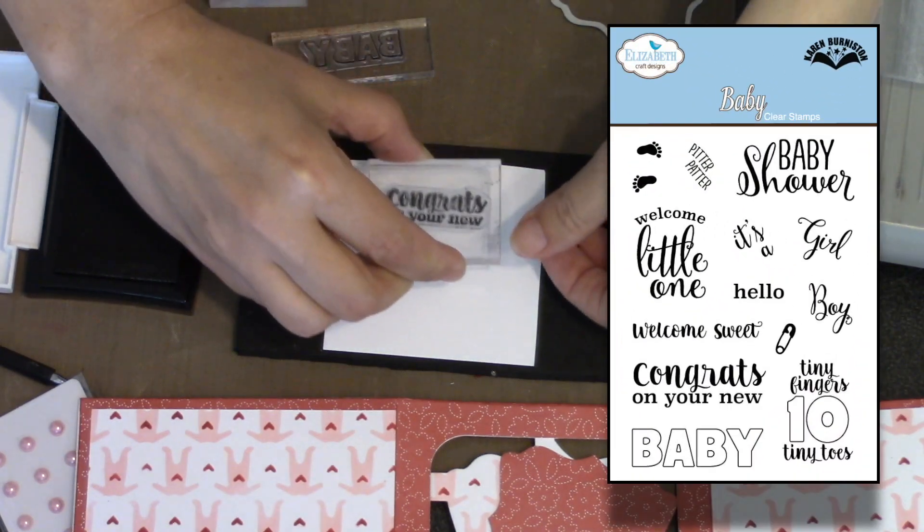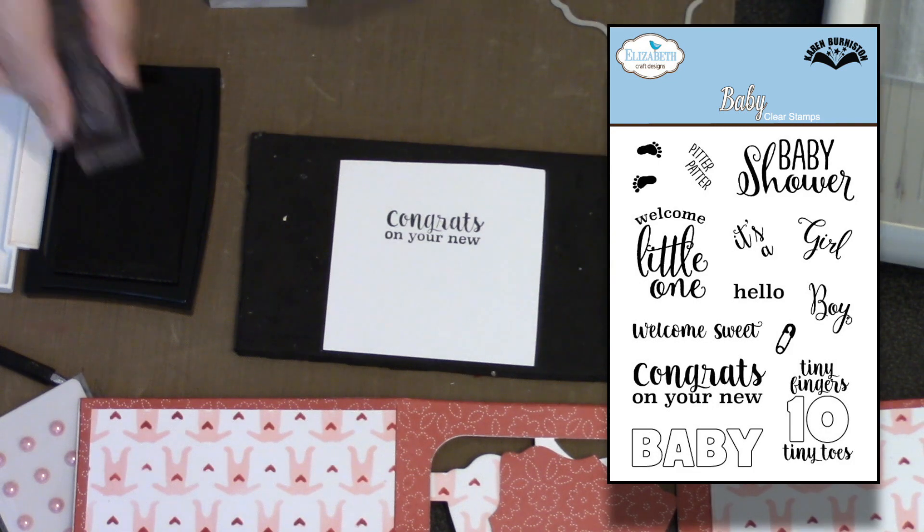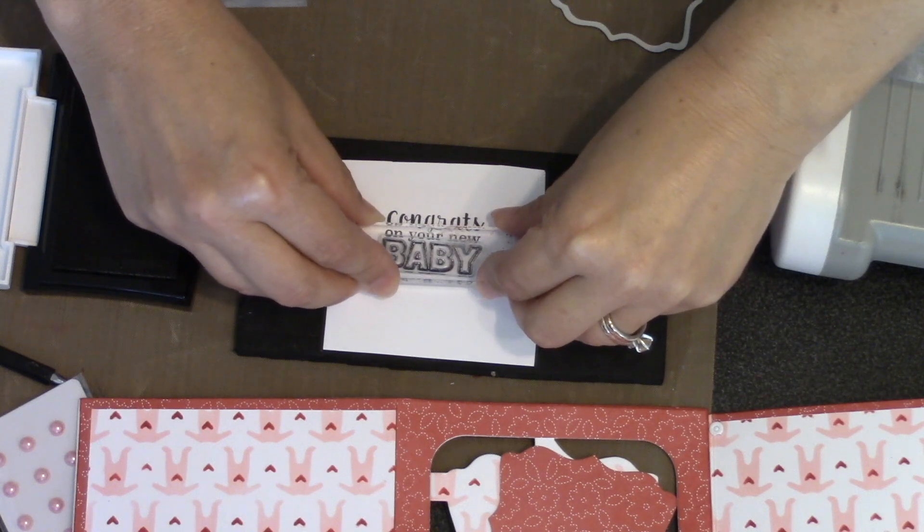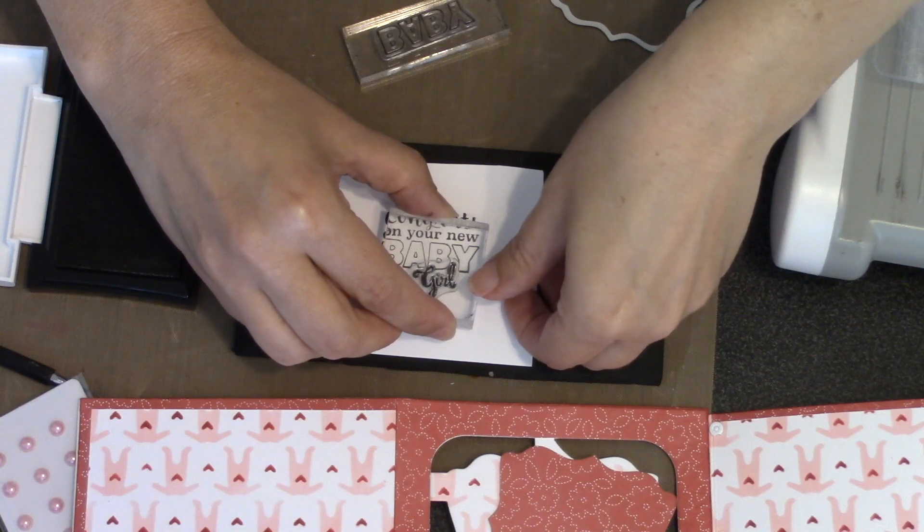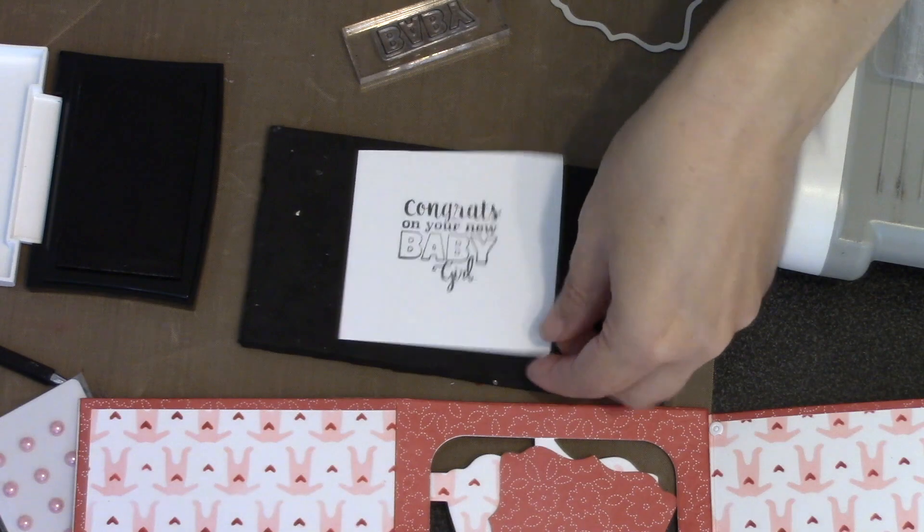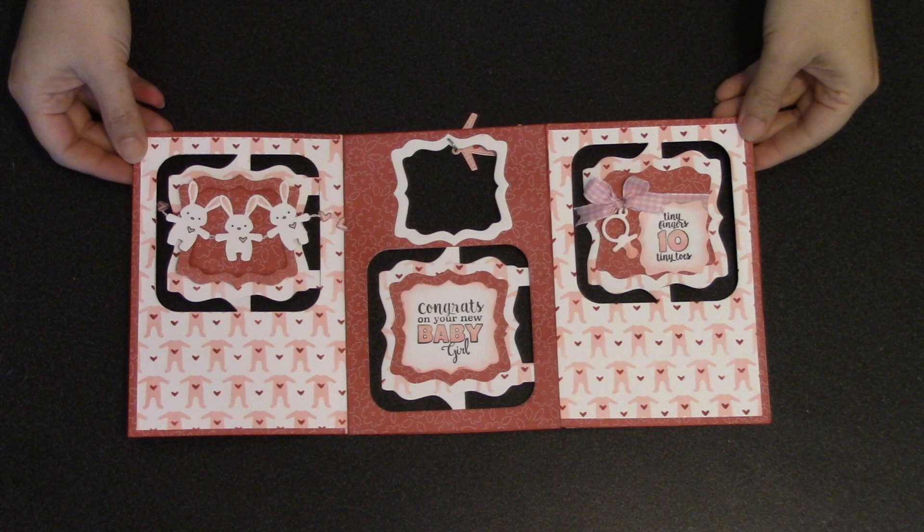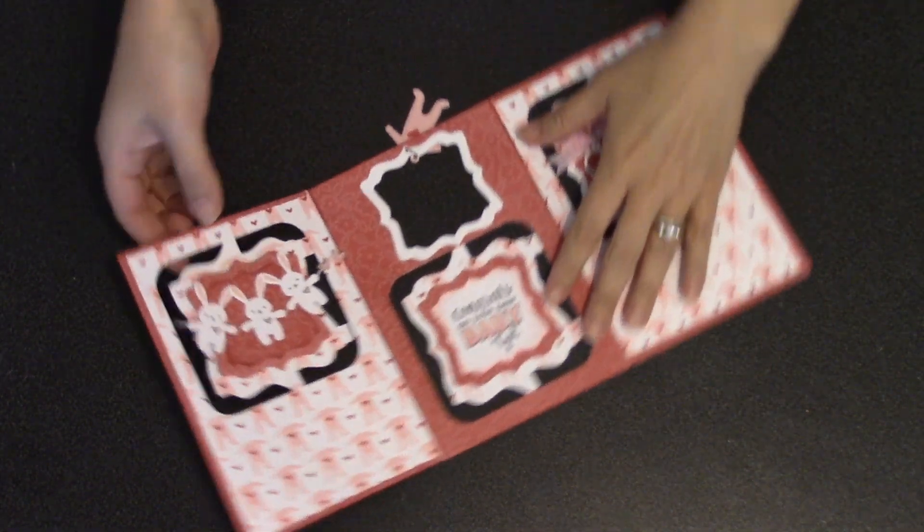The baby clear stamp set is going to provide the perfect greetings. This particular set has lots of things that can be combined in different ways. So I'm going to use the congrats on your new and then I'll put baby right underneath that and then I'll stamp in the word girl. I can use one of the decorator dies from the fancy accordion to cut that out perfectly to fit on my project. And I'll also use some pink markers to color in the word baby. And then I just added some similar decorations to page three, layered my different labels, I've got my bunnies on page one and now I've got everything decorated. I'm ready to assemble the album.